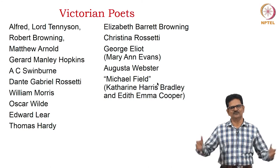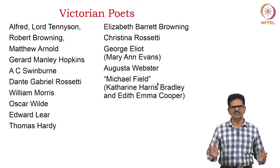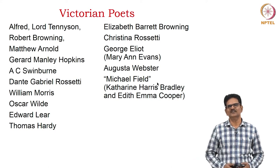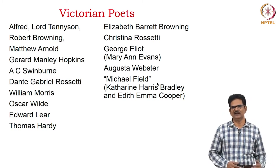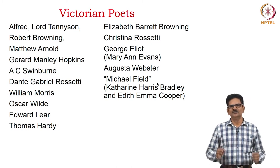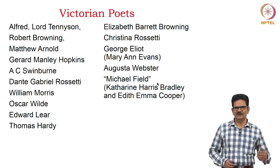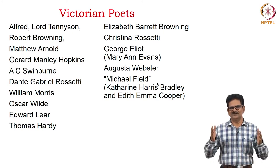Here we have a list of prominent Victorian poets, beginning with Lord Tennyson, Robert Browning, Matthew Arnold, Gerald Manley Hopkins, A.C. Swinburne, Dante Gabriel Rossetti, William Morris, Oscar Wilde, Edward Lear, and Thomas Hardy — who links Victorian poetry with twentieth-century poetry. Women poets include Elizabeth Barrett Browning, Christina Rossetti, George Eliot (pen name Mary Ann Evans), Augusta Webster, and Michael Field — a pseudonym used collaboratively by Catherine Harris Bradley and Edith Emma Cooper, who wrote poems, stories and novels together.